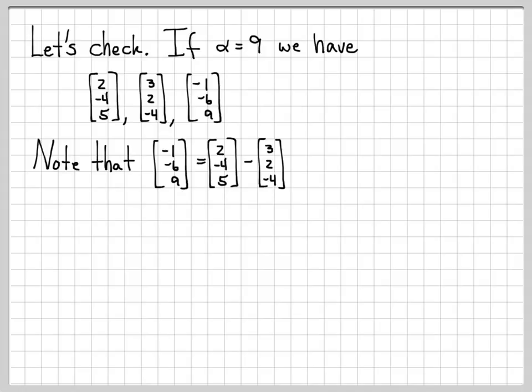We can see that the vector [-1, -6, 9] is equal to the first vector, [2, -4, 5], minus the second vector, [3, 2, -4]. Because look, two minus three is a negative one, and negative four minus two is negative six, and five minus a negative four is nine.